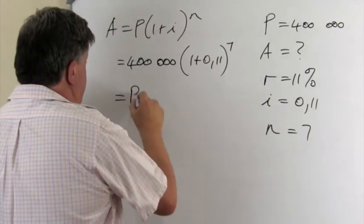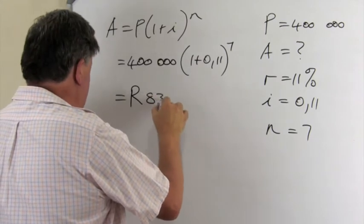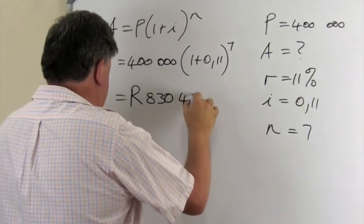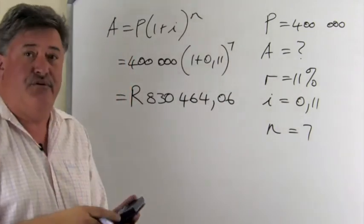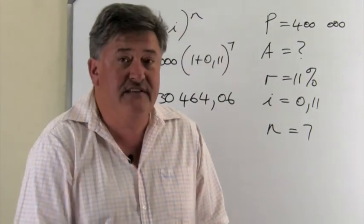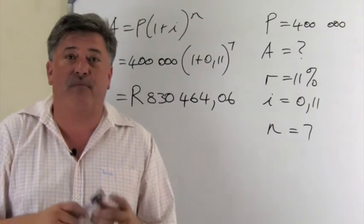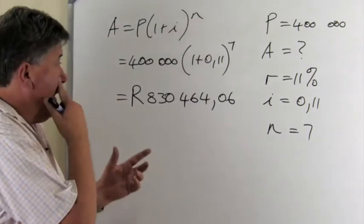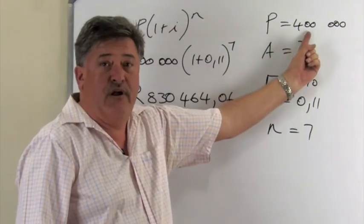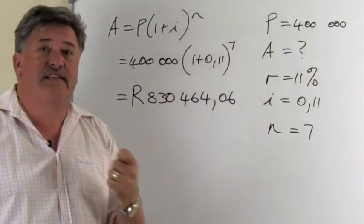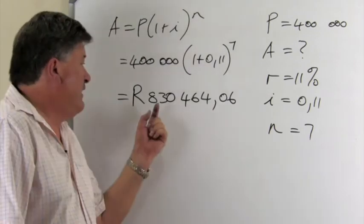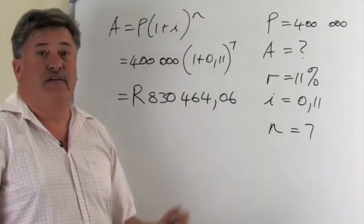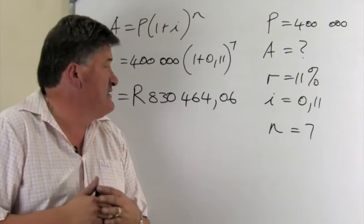And check your answer against mine. And it almost sounds like it can't be true. But as you can see, in 7 years from now, that car costing at the moment R400,000, for the same car, you will pay more than double, R830,464.06.